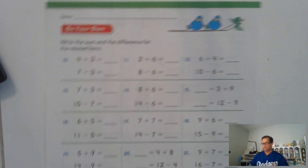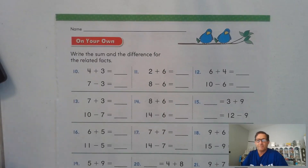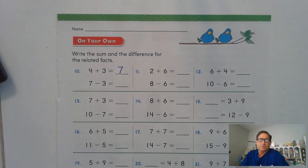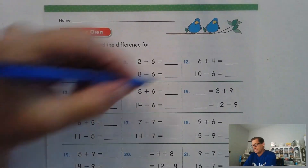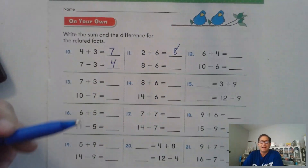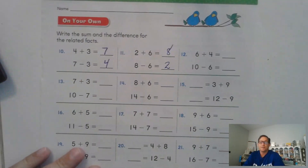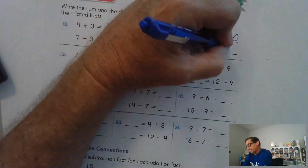We're going to page 139 to continue to practice. Write the sum and the difference for the related fact. Four plus three — we should know that's seven. So what is a related subtraction fact for four plus three equals seven? Seven minus three equals what? Three plus what is seven? Four. Two plus six is eight. Eight take away six: six plus what is eight? Two. Six plus four is 10. Ten minus six is what? Six plus what is 10? Four.